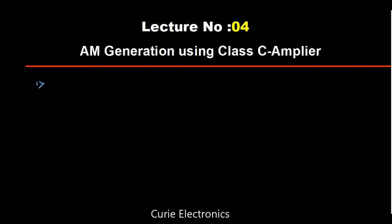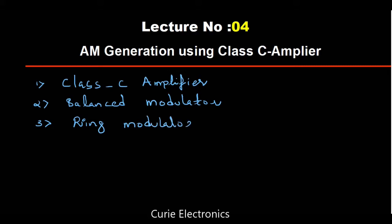The first method is using class C amplifier, transformer coupled class C amplifier. The second one is the balanced modulator. These are different circuits to generate AM. And the third one is ring modulator. These three are the generally used ones.